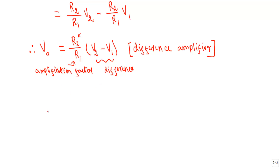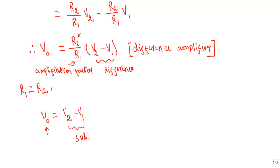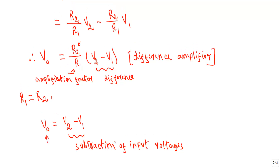Now, if I make all four resistances equal in the op amp difference amplifier circuit — that is, if R1 equals R2 — the output voltage V0 becomes equal to V2 minus V1. The output voltage is simply the subtraction of the two input voltages. So when all four resistances have equal value, the circuit becomes an op amp subtractor circuit.